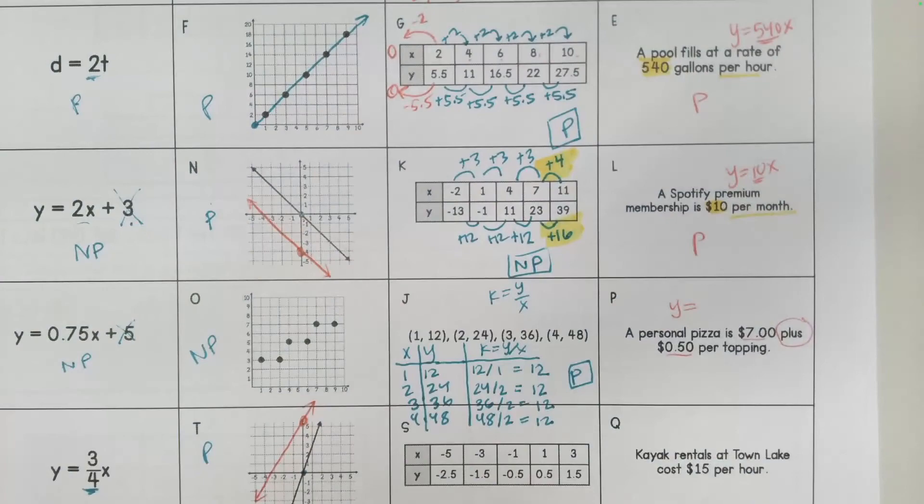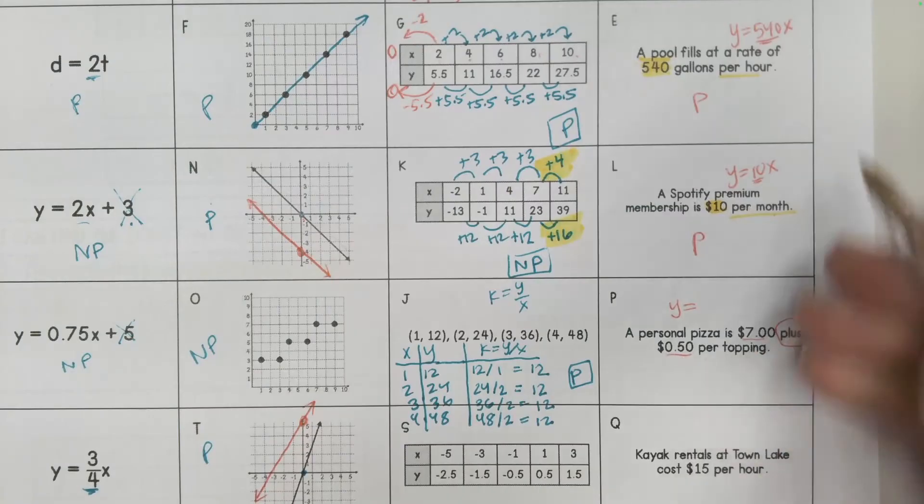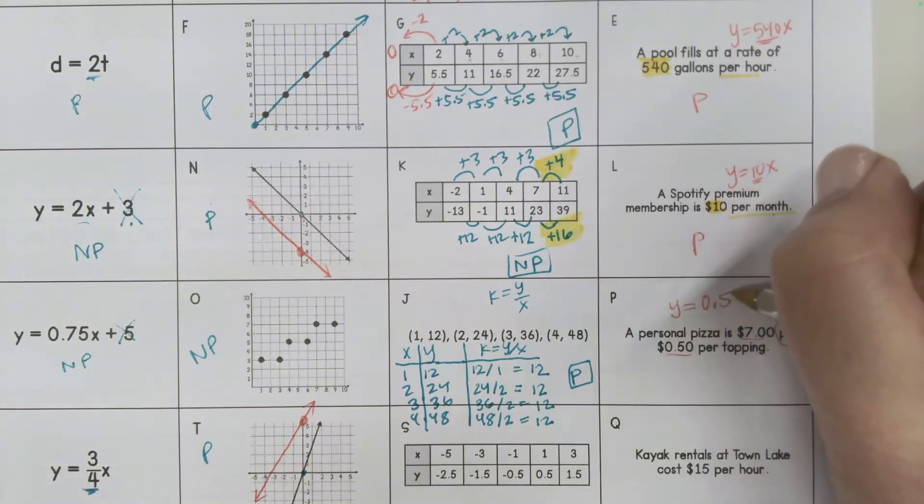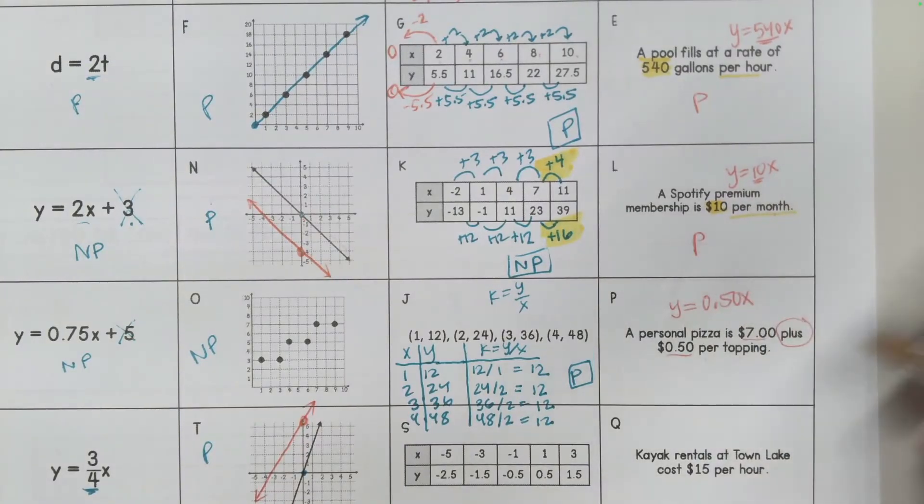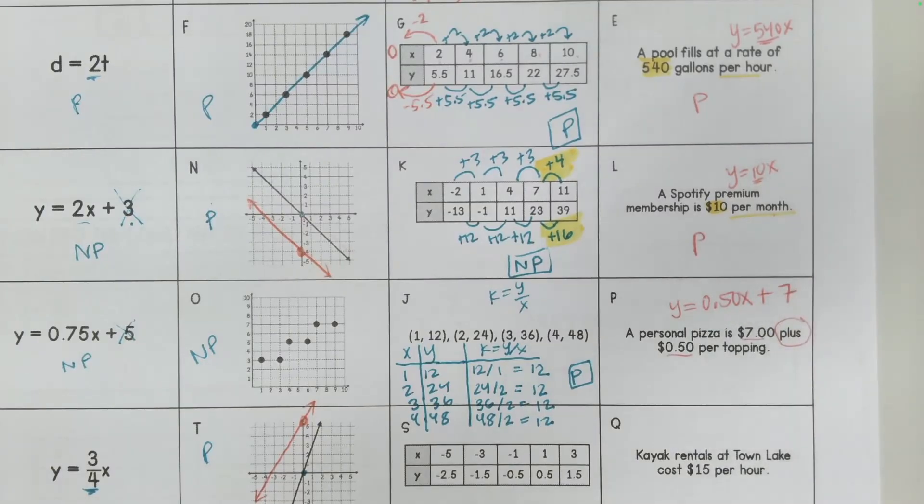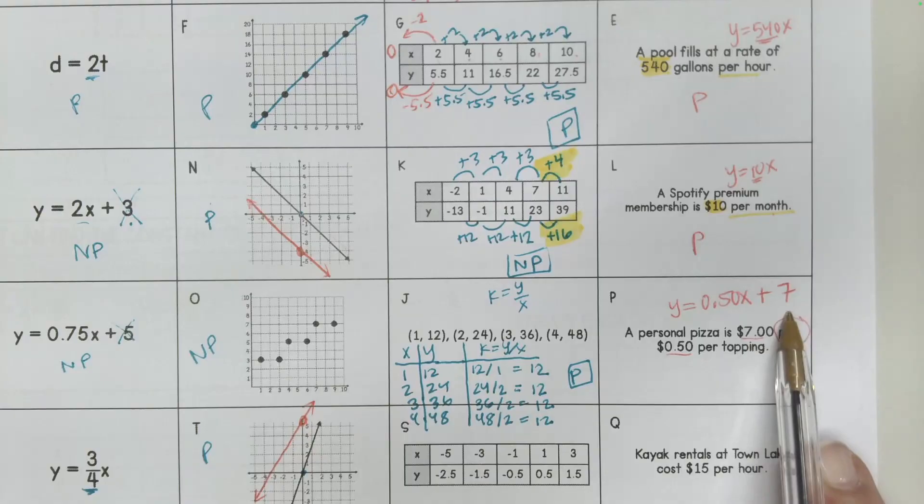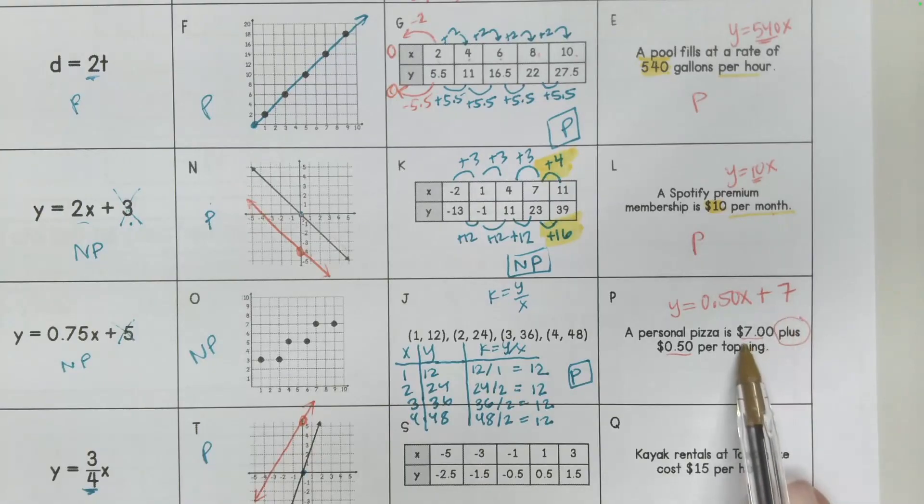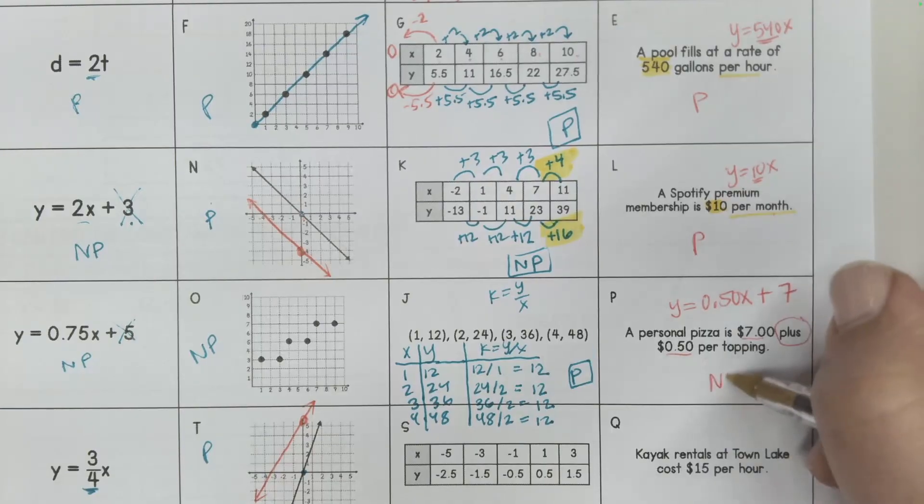So this one, what's my rate? Something that's changing per month, per topping. With every topping, it's going to cost 50 cents for every topping. And where did I start or how much did I start off with? Well, one pizza, if I had no toppings, costs $7. So you can see it has an initial value. It's starting somewhere. So this is not proportional.